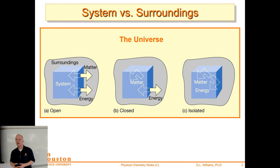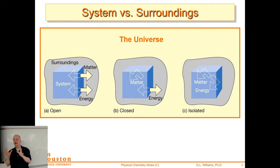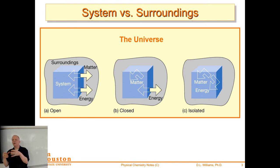A close example of an isolated system would be a bomb calorimeter. We have it sealed up so that matter can't leave. The calorimeter itself is the isolated system because we have insulation around it. Inside, we have liquid around the bomb. The energy generated by the bomb goes into the liquid and we measure the temperature change of the liquid.